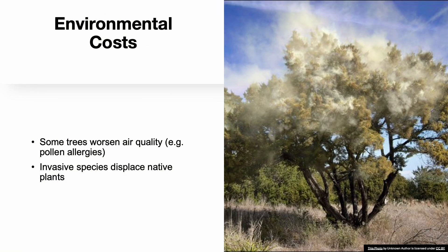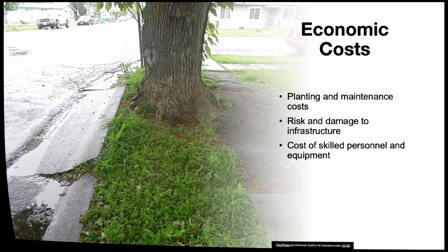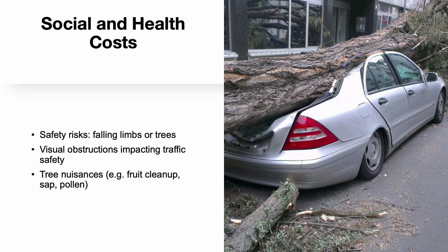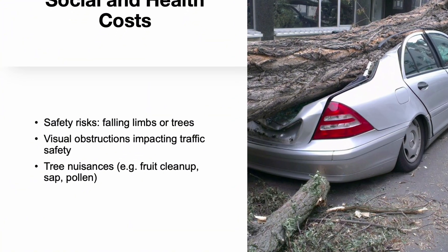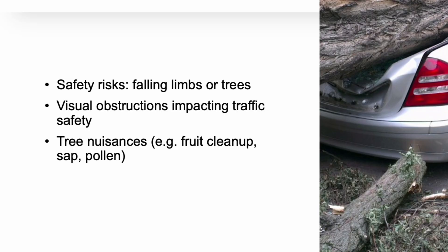Despite their benefits, some trees can negatively affect air quality. Certain species produce allergenic pollen that worsens respiratory conditions. Invasive tree species introduced in cities can displace native trees and disrupt ecosystems. Planting and maintaining trees requires investment — irrigation, pruning, pest management, and risk assessments are all ongoing costs. Trees may also damage infrastructure like sidewalks and utilities, resulting in repairs or lawsuits. Tree failure poses a safety risk, visual obstructions can create traffic hazards, and some trees produce litter, fruits, or sap that may be viewed as nuisances.